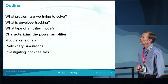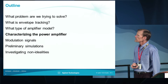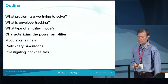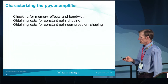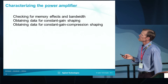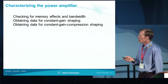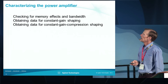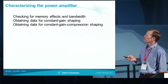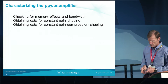It's useful and necessary to do some characterization of the power amplifier prior to running envelope tracking. You can check for memory effects and bandwidth of the amplifier. I'll show how to attain a constant gain shaping curve and how to attain data for a constant gain compression shaping as well, if you prefer to use that approach.